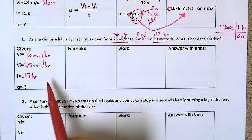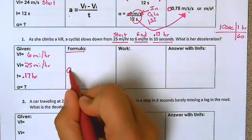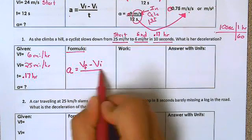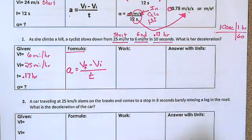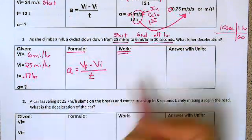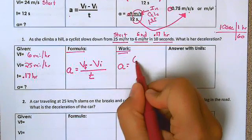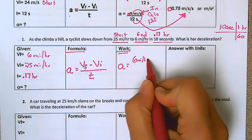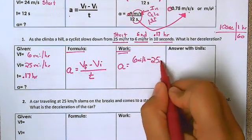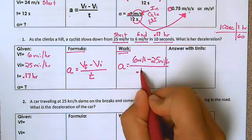So moving on, let's look at which formula we're going to use for acceleration. We're going to use acceleration is the final velocity minus the initial velocity divided by the time. In the next box, we're going to show all of our work. So I'm going to take these numbers that are given to us and plug them in. So acceleration is the final velocity, which is six miles an hour minus 25, which is the initial miles per hour. And all of that divided by the time of 0.17 hours.